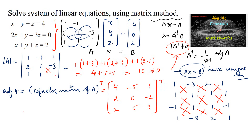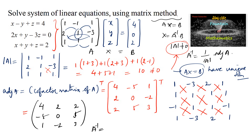So the adjoint of A, after transposing the cofactor matrix (interchanging rows and columns), is: [4, 2, 2; -5, 0, 5; 1, -2, 3]. Therefore A inverse equals 1 over det(A) times adjoint of A, which is (1/10) × [4, 2, 2; -5, 0, 5; 1, -2, 3].